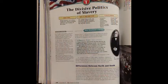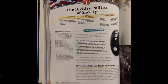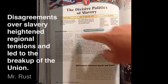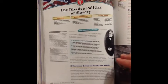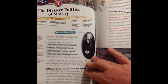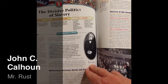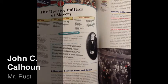On page 156, you will see Chapter 4, Section 1: The Divisive Politics of Slavery. The main idea of this section is that disagreements over slavery heightened regional tensions and led to the breakup of the Union. Here you'll see a dramatic picture of John C. Calhoun, who represented South Carolina and was one of the leading voices in the government on states' rights.